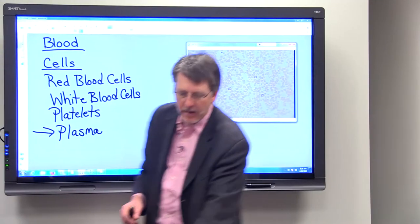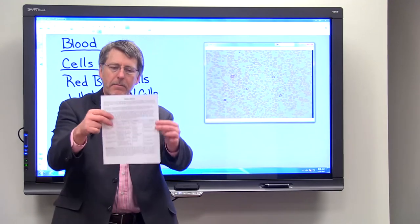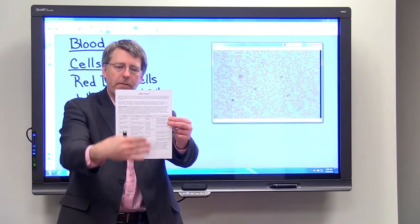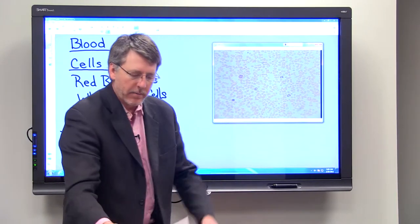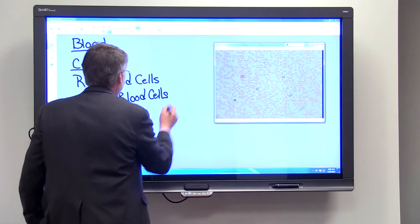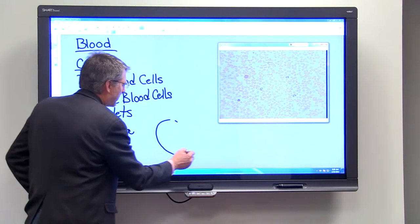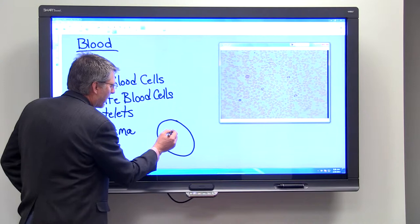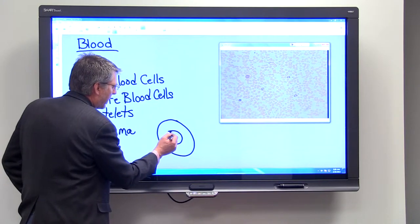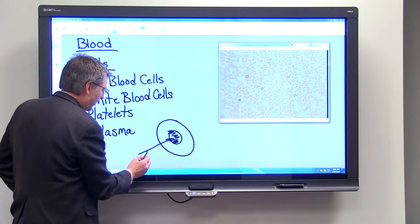When you look at ones flat on, like this piece of paper, if you look at it flat on, it would be this way. You see that those red blood cells are circular, but I want you to notice that in the middle of the red blood cells, they're much lighter.